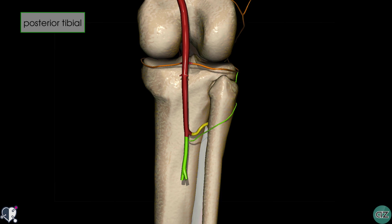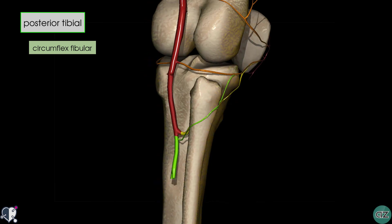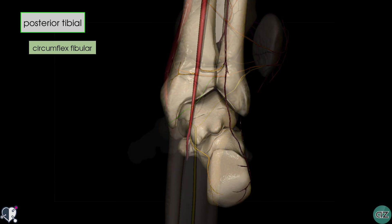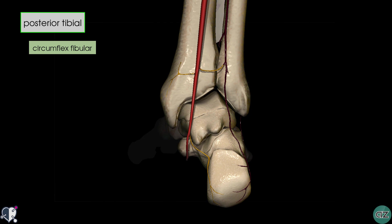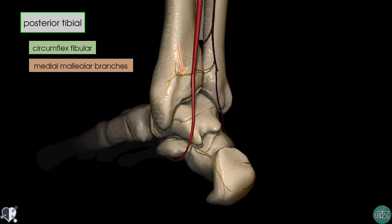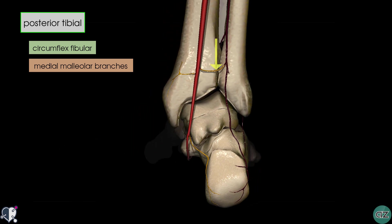Coming back to the posterior tibial artery, let's look at some of its branches. Proximally we have the circumflex fibular artery, which winds around the neck of the fibula and anastomoses with the lateral inferior genicular artery. The posterior tibial artery then descends posteriorly down the leg. Distally it gives off branches to supply the medial malleolus, and there's also a communicating branch which anastomoses with the communicating branch of the fibular artery.